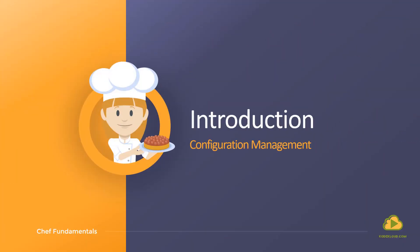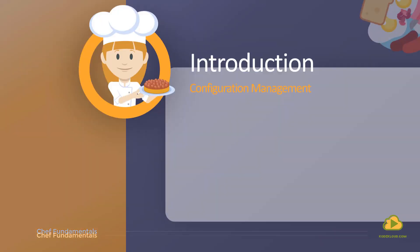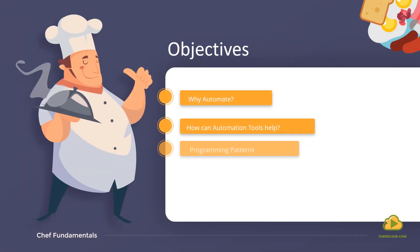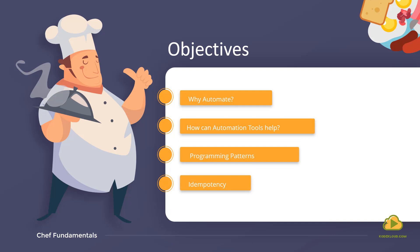In this lecture, we will get introduced to configuration management and automation. We will start by looking at why you might need automation in your environment, how automation tools can help, the different programming patterns such as imperative and declarative, the different characteristics of automation tools like push-pull mechanism, idempotency, etc.